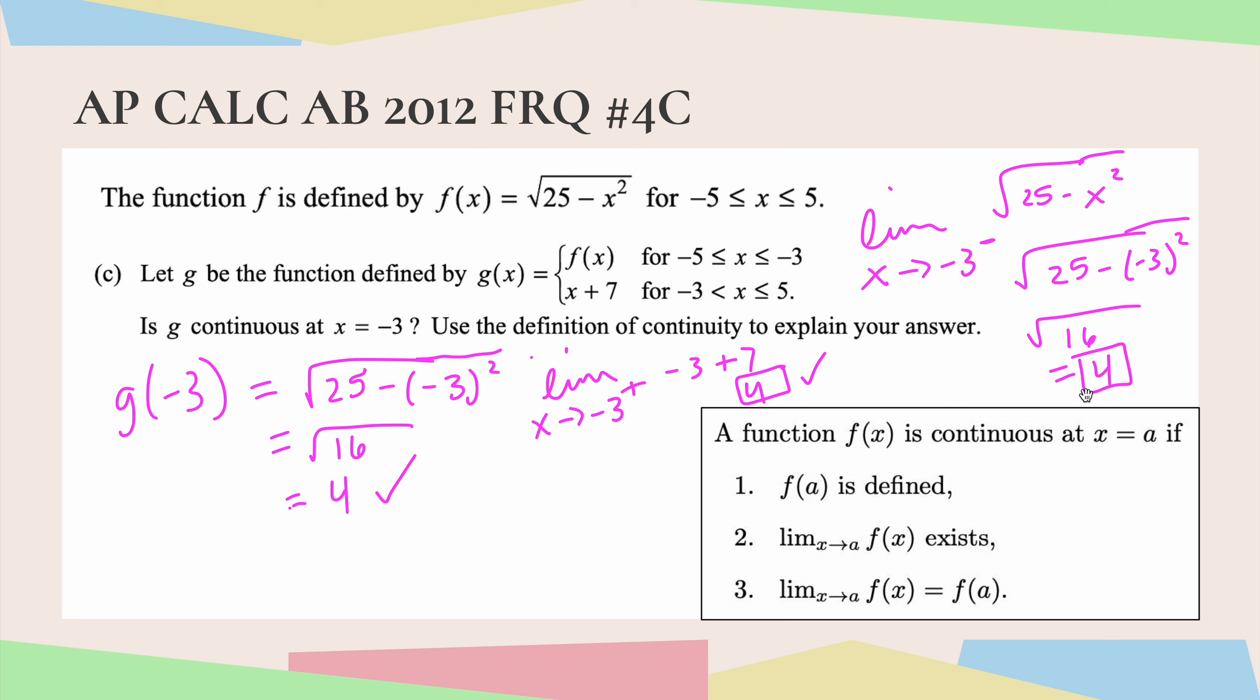Therefore, I can conclude that g is continuous at x equals negative 3 because the limit from the right equals the limit from the left equals g of negative 3, and they all equal 4.